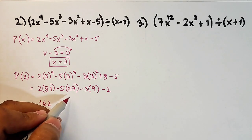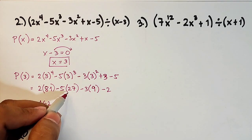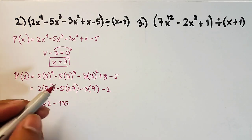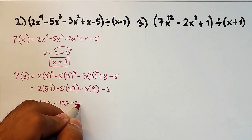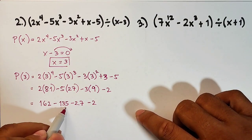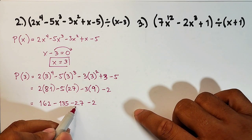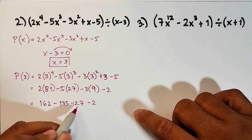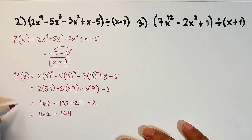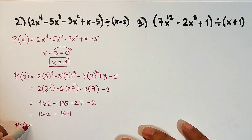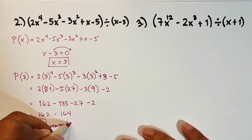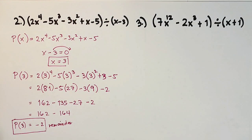So we have 162 minus 135 minus 27 minus 2. Adding these together: 162 minus 164 equals negative 2. So p of 3 equals negative 2, and this is the remainder when you divide this polynomial by x minus 3.